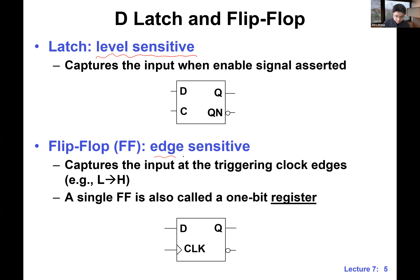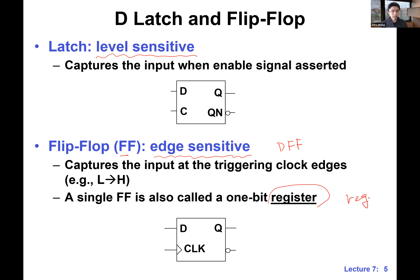The acronym for flip-flop is FF, so in many cases we say DFF. Another common way to refer to the flip-flop is 'register' — you will see this term a lot, especially when writing Verilog. The shorthand is 'reg.' In Verilog, however, using 'reg' may not always become a flip-flop — it may become something else. But going forward, FF, DFF, and register all refer to flip-flop. Pay attention to the triangle symbol in circuit diagrams — that means we are responding to the edge.